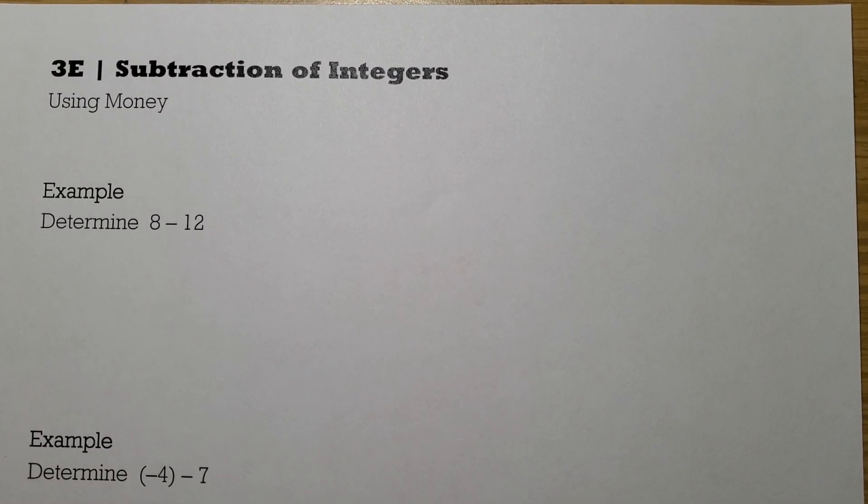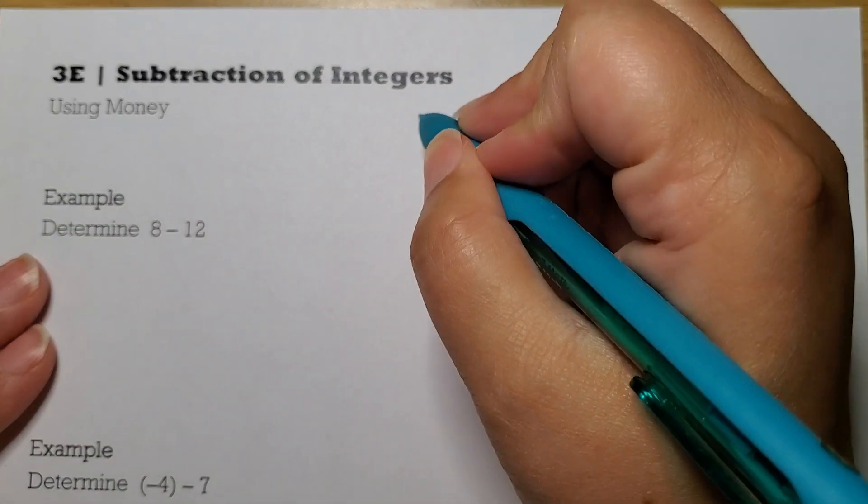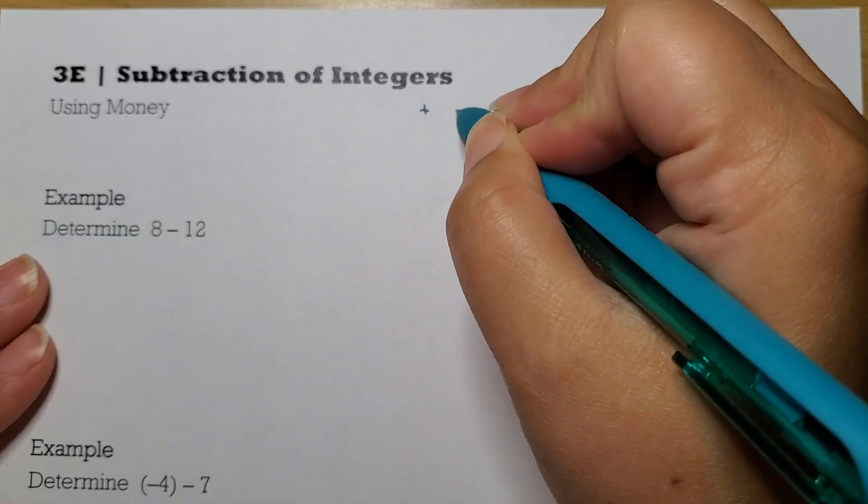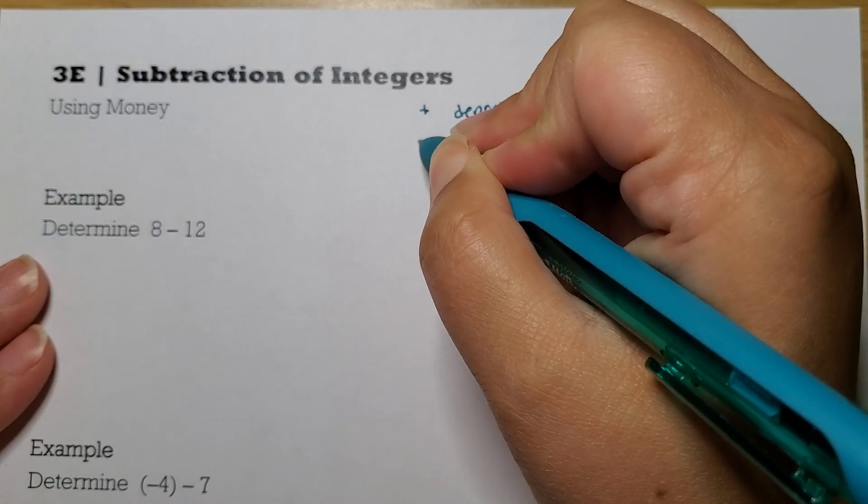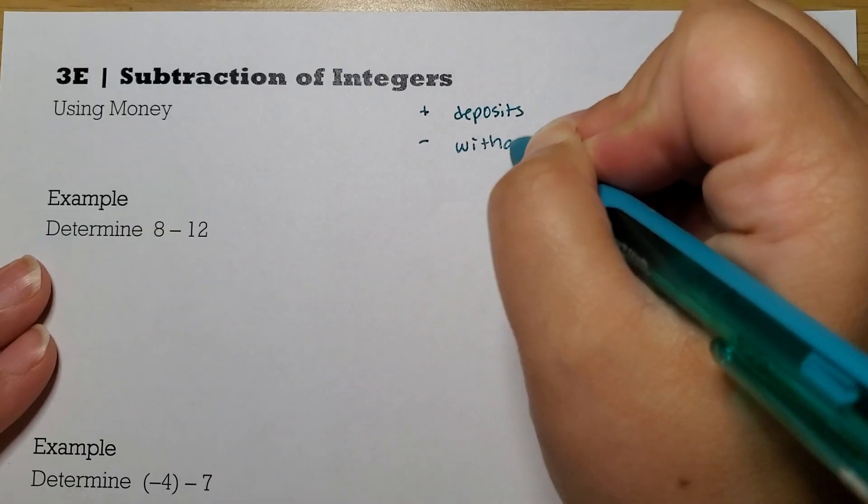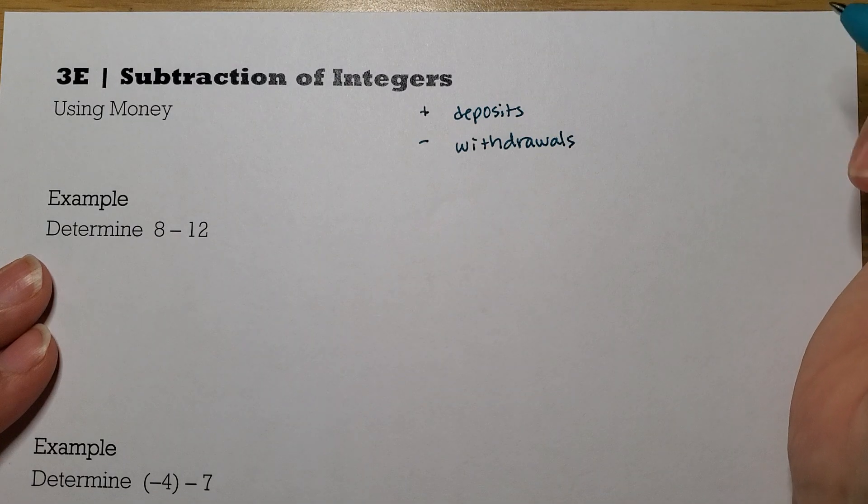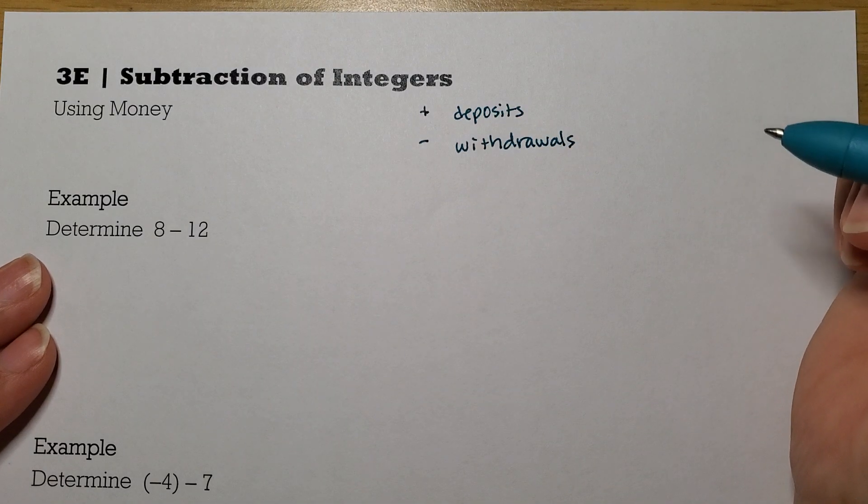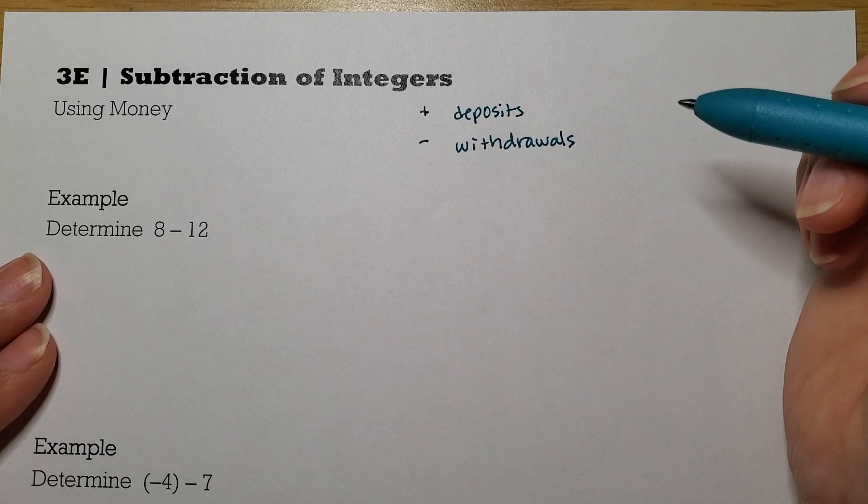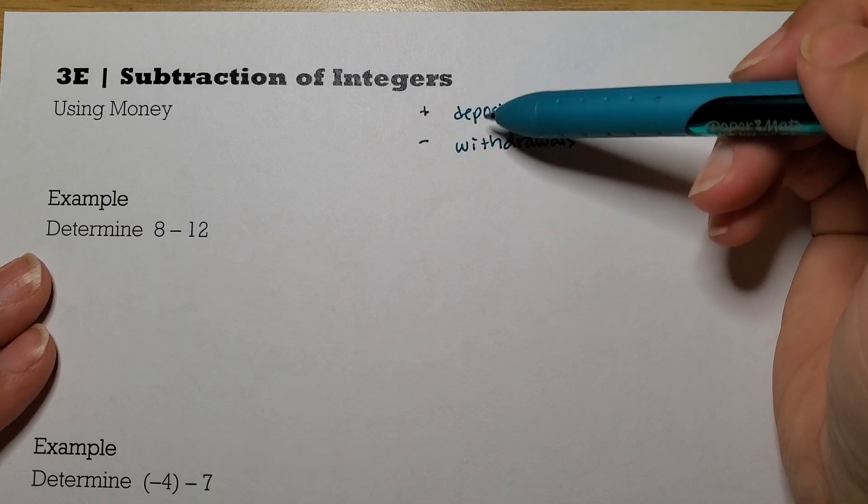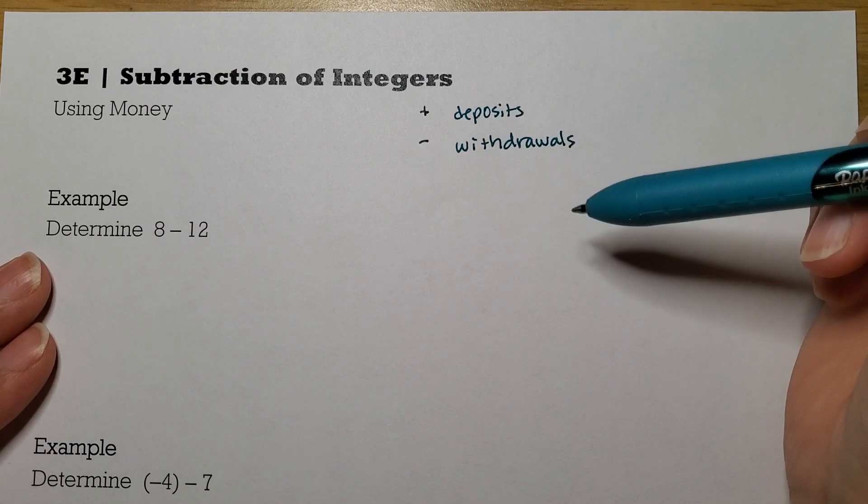So when we talked about adding integers using money, just a reminder that positive numbers were deposits, and negative numbers were withdrawals. When we think of things in terms of addition, if I had a number plus a number, it would be like making either the deposit or the withdrawal, and then making another deposit or withdrawal.